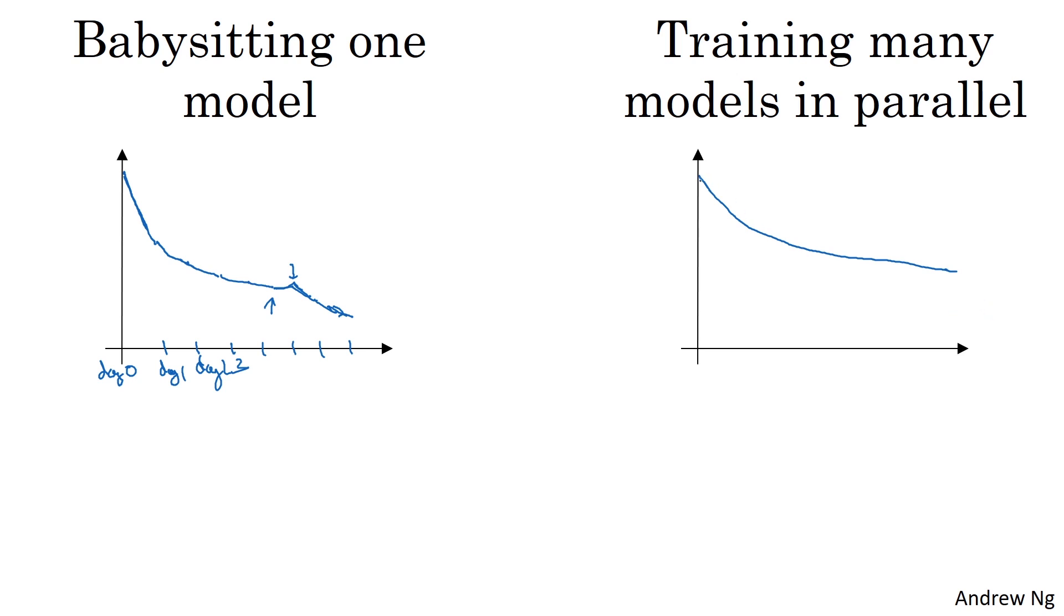And then at the same time, you might start up a different model with a different setting of the hyperparameters. And so your second model might generate a different learning curve, maybe one that looks like that. It looks like that one looks better. And at the same time, you might train a third model, which might generate a learning curve that looks like that. And another one that maybe this one diverges, so it looks like that and so on. But you might train many different models in parallel, where these orange lines are different models.